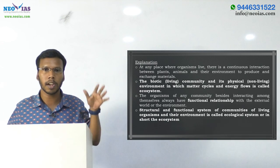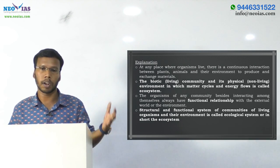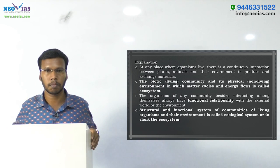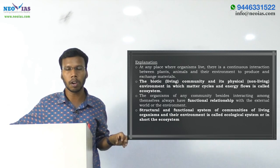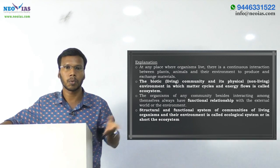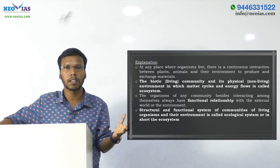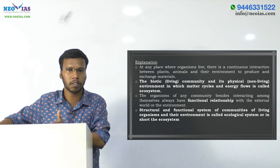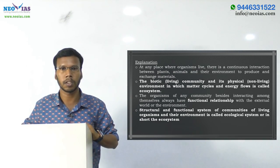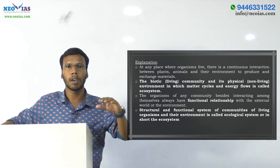We can also say that living organisms have a functional relationship with their environment. For example, plants are the producers — they are producing food for other components of the ecosystem. They absorb nutrients from the soil and carbon dioxide from the atmosphere, thereby helping in nutrient cycling. Plants also provide food for other components of the ecosystem, like herbivores — rabbits, deer, elephants. So producers have these kinds of functions, and every living organism in this environment has a functional relationship with their environment.